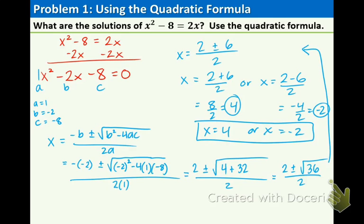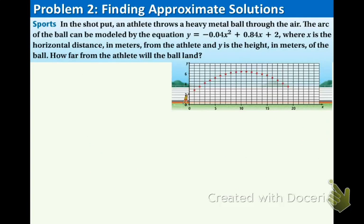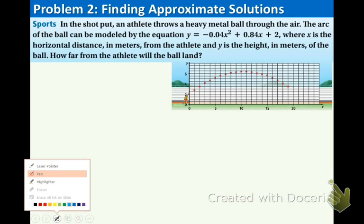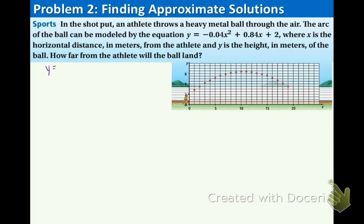Now you're thinking, well what's the application of this? For all you sports fans, this problem is for you — it's about shot put. An athlete throws a heavy metal ball through the air. The arc of the ball can be modeled by the equation y equals negative 0.04x squared plus 0.84x plus 2, where x is the horizontal distance in meters from the athlete and y is the height in meters of the ball. How far from the athlete will the ball land? A common application of quadratics is throwing some sort of ball in a sport. The formula is already in standard form, so we can simply identify our a, b, and c values and plug them in.